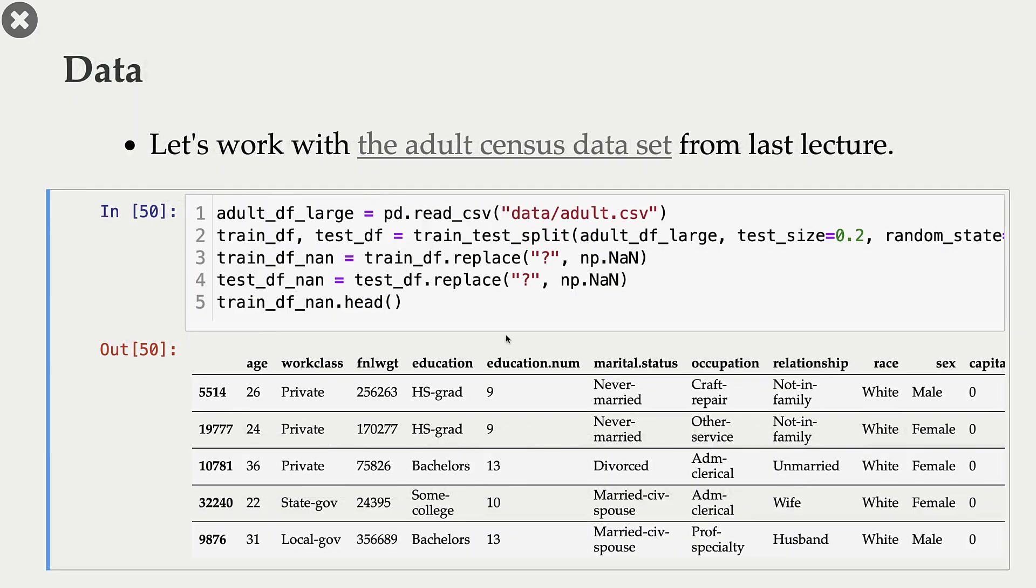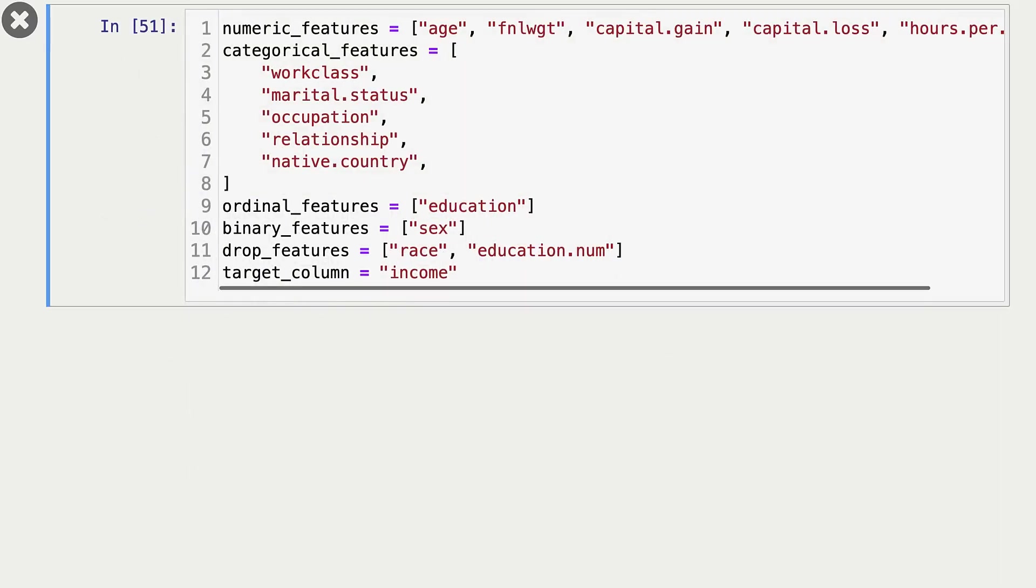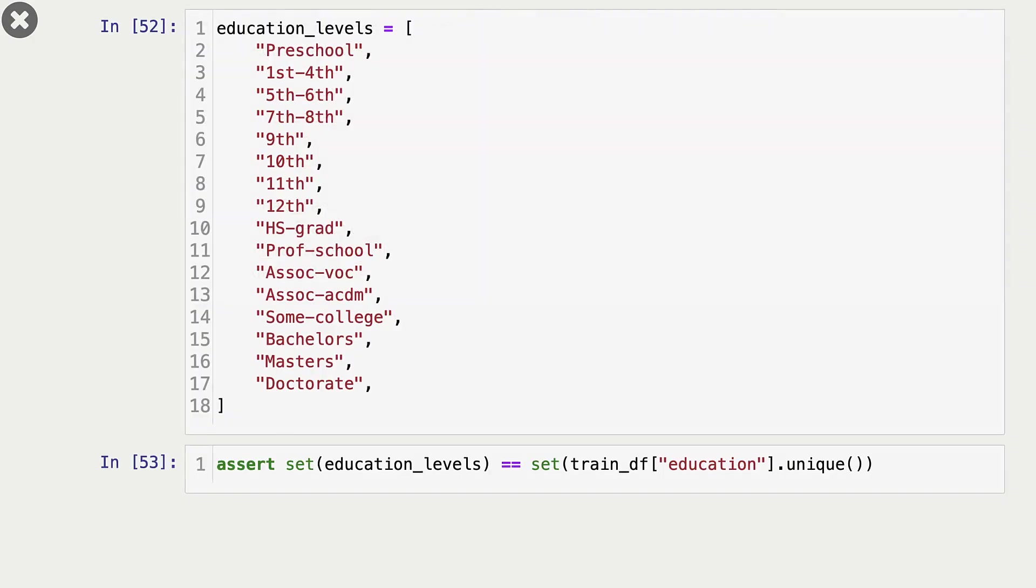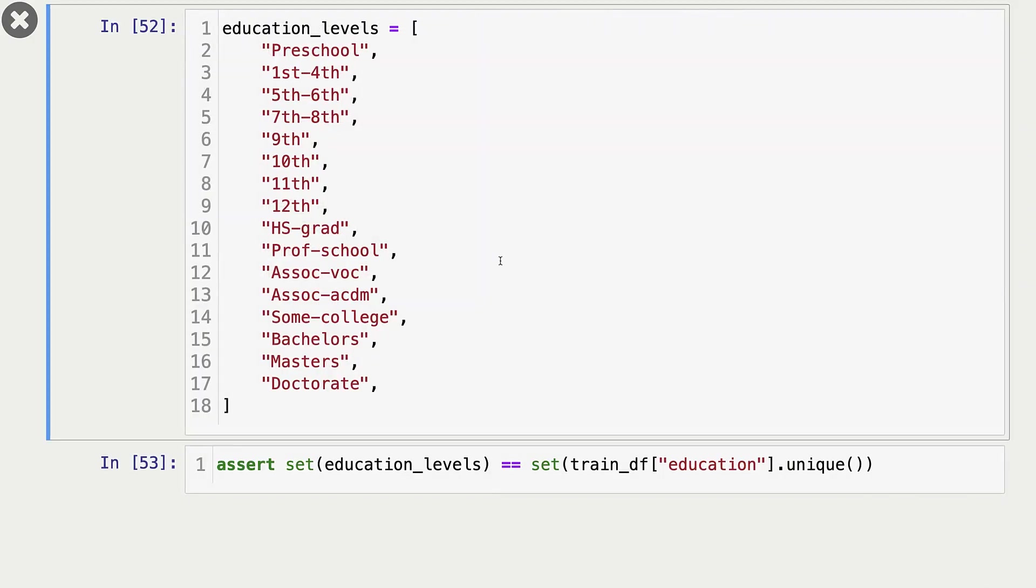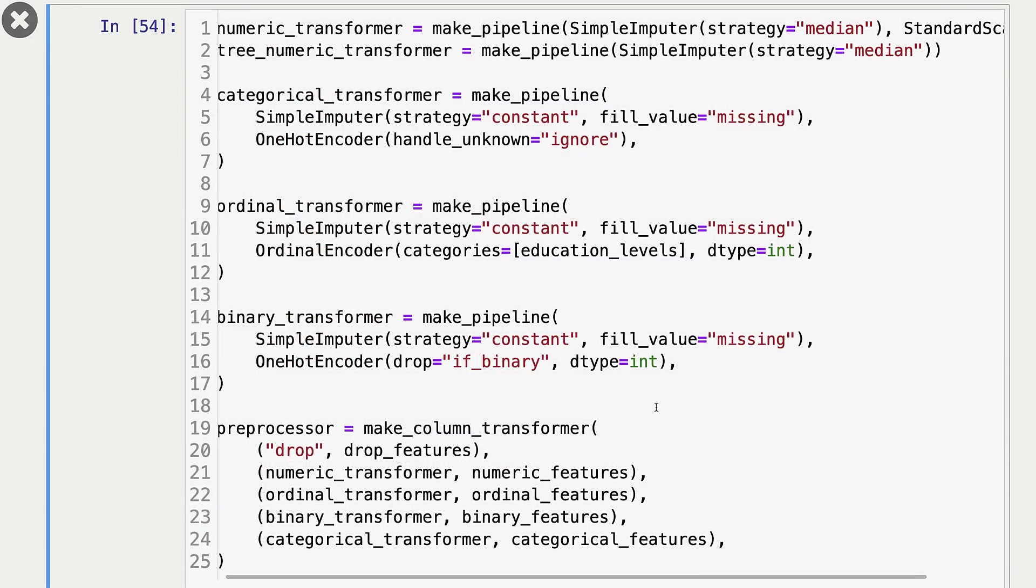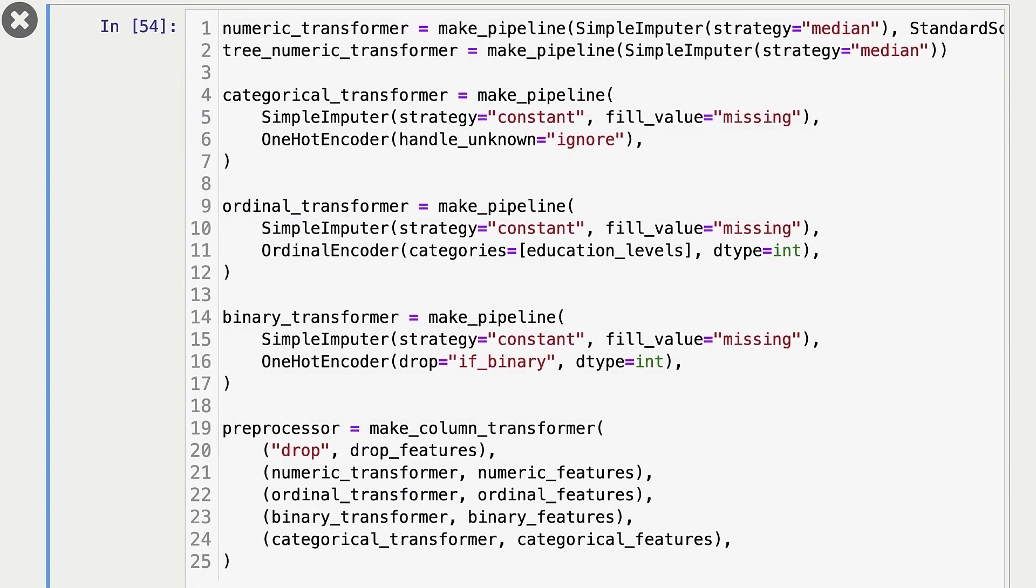To demonstrate this, I'm going to use the dataset that we used in the last lecture, the adult census dataset. So this is our dataset. I'm defining numeric, ordinal, binary, categorical features, and these are our categories for our ordinal feature. These are our transformers and this is our preprocessor with all transformations. These are all things we did last time.